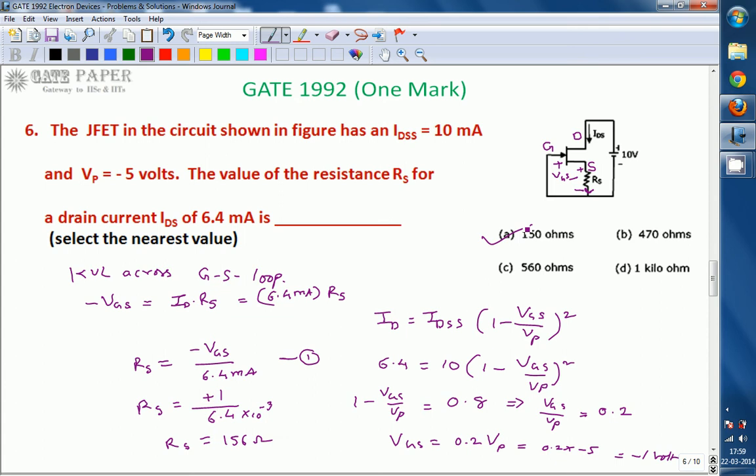Simply, one important point. The drain current that is flowing also flows in the source. That ID flows through RS also. From that, we go with the KVL across gate source loop. We find RS value as minus VGS by ID value. VGS we calculated from the drain equation. That you substituted and RS value is 156 ohms. Thank you.